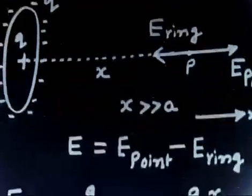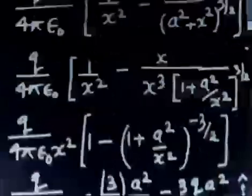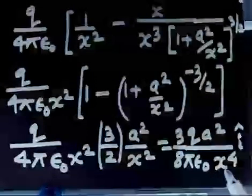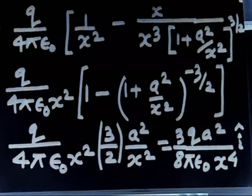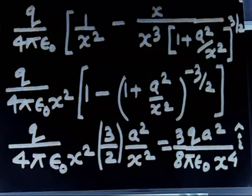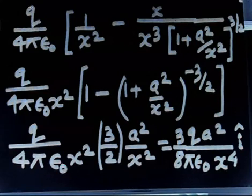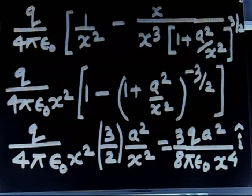An important observation: the resultant electric field here varies as 1/X⁴. Recall that for a single point charge, E varies as 1/X². For a dipole, E varies as 1/X³. In this configuration, E varies as 1/X⁴. By changing the charge configuration, we can produce fields varying as 1/X², 1/X³, 1/X⁴, and so on. The quadrupole configuration also gives a 1/X⁴ dependence — this aligns with what was discussed in class.